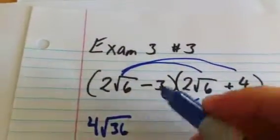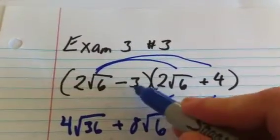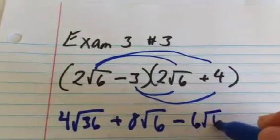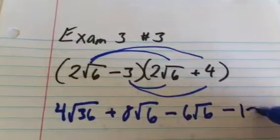2 root 6 times 4 is going to be 8 root 6. Negative 3 times 2 root 6 is minus 6 root 6. Negative 3 times 4 is minus 12.